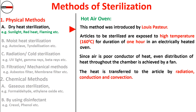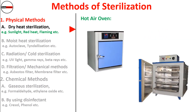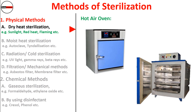Radiation, conduction, and convection are the three modes of heat transfer in the hot air oven. The oven should be fitted with a thermostat control, temperature indicator, mesh shelves, and adequate insulation. You can see in the picture how a typical oven looks, sterilizing objects via these three modes of heat transfer.